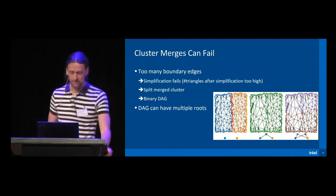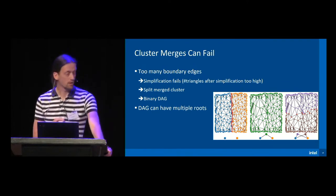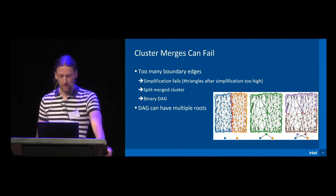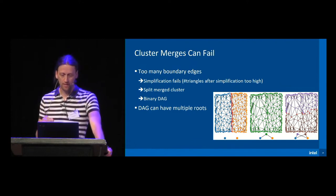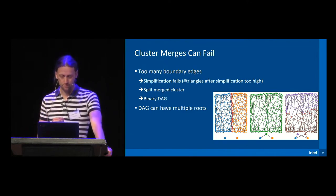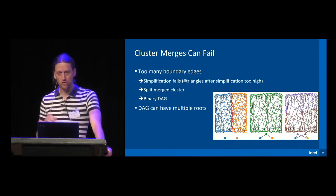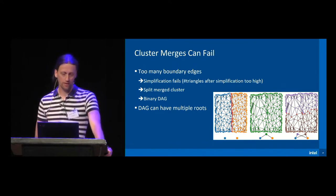The cluster splitting reduces the probability of failed simplifications higher up in the hierarchy, but at the same time turns the hierarchy from a binary tree into a binary DAG representation. Even with cluster splitting, at some point — particularly way up in the hierarchy — simplification of clusters will no longer be possible. The remaining unmergeable clusters become the root nodes of our binary DAG. This is in contrast to a binary tree where you have only one root; here we have multiple roots for the binary DAG, but they are also easy to handle.